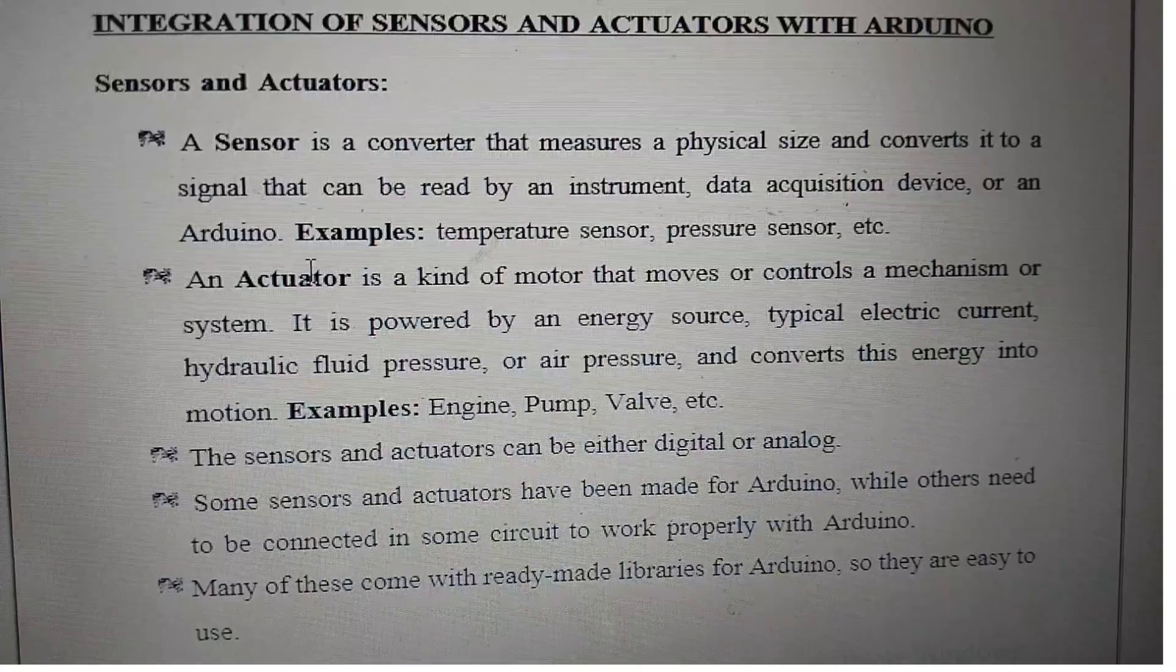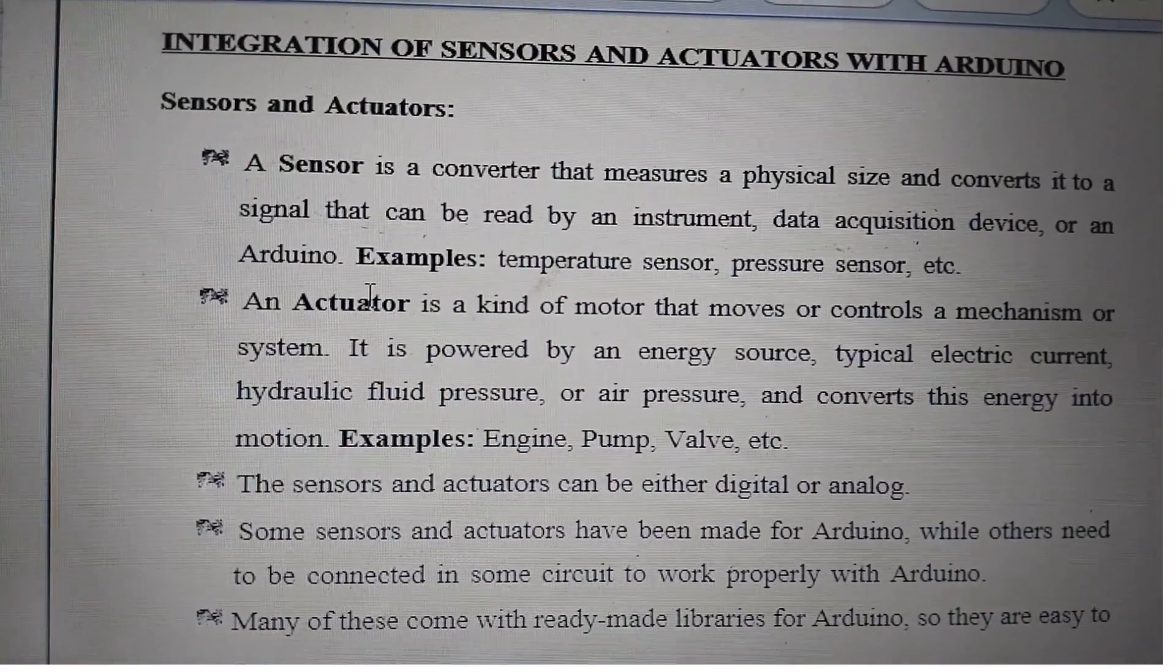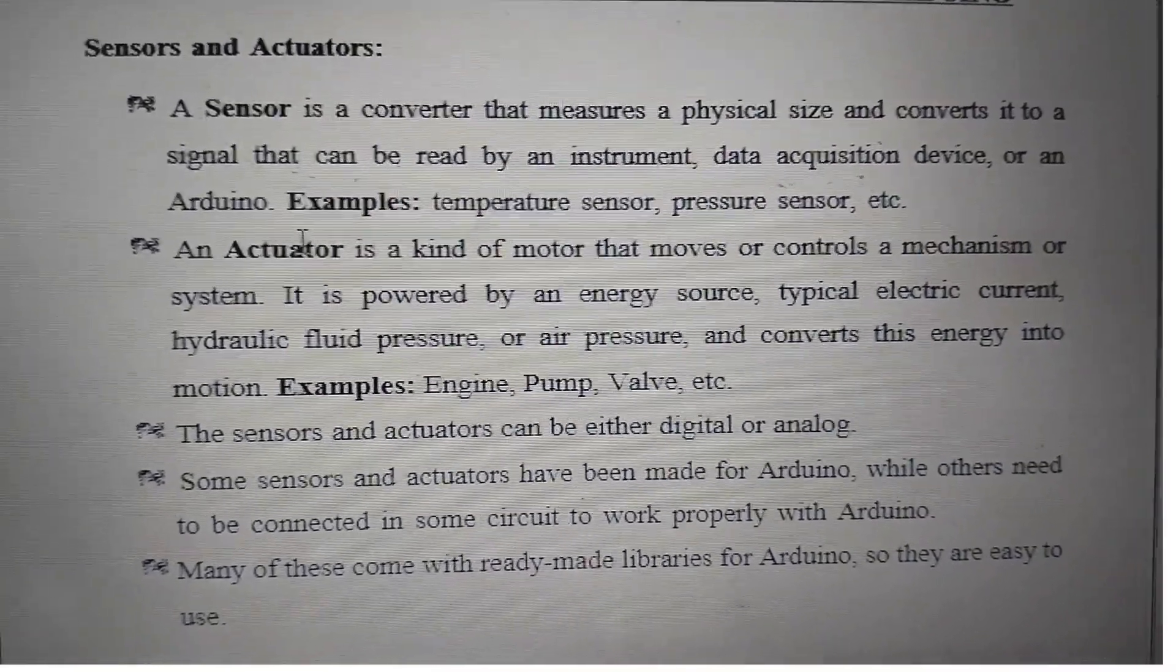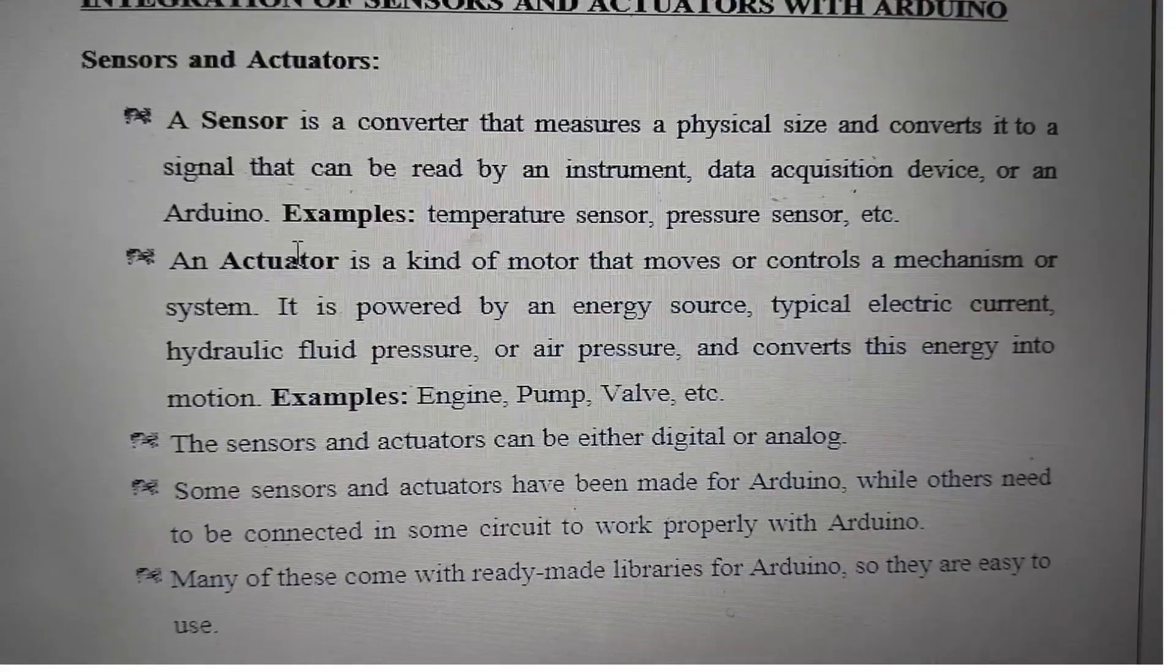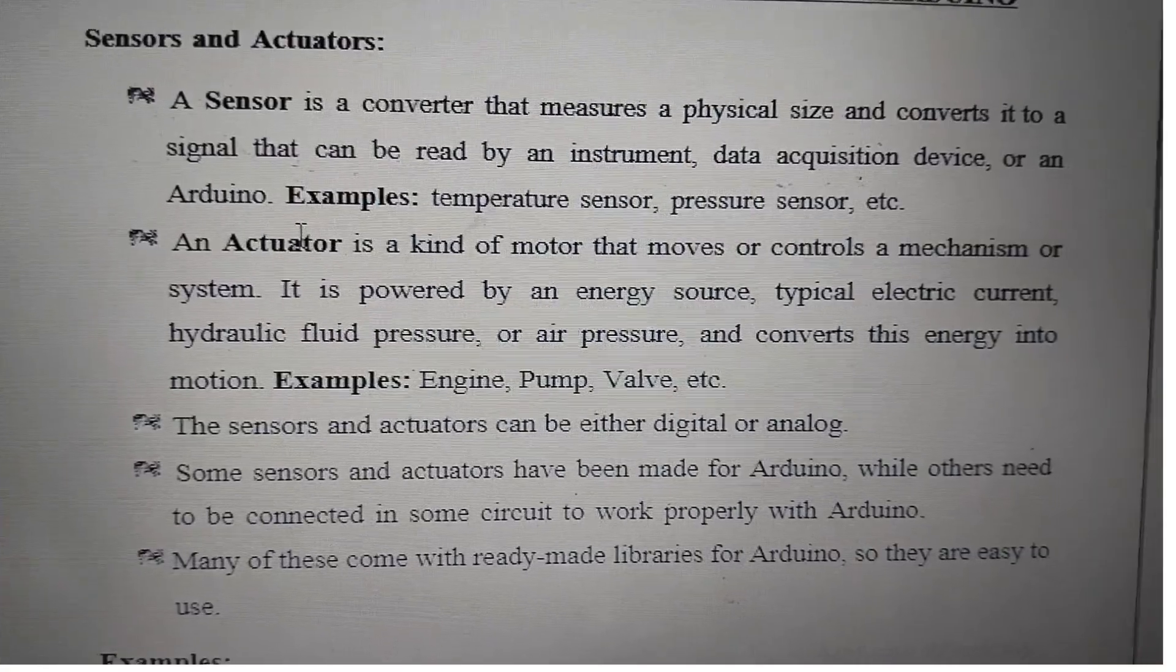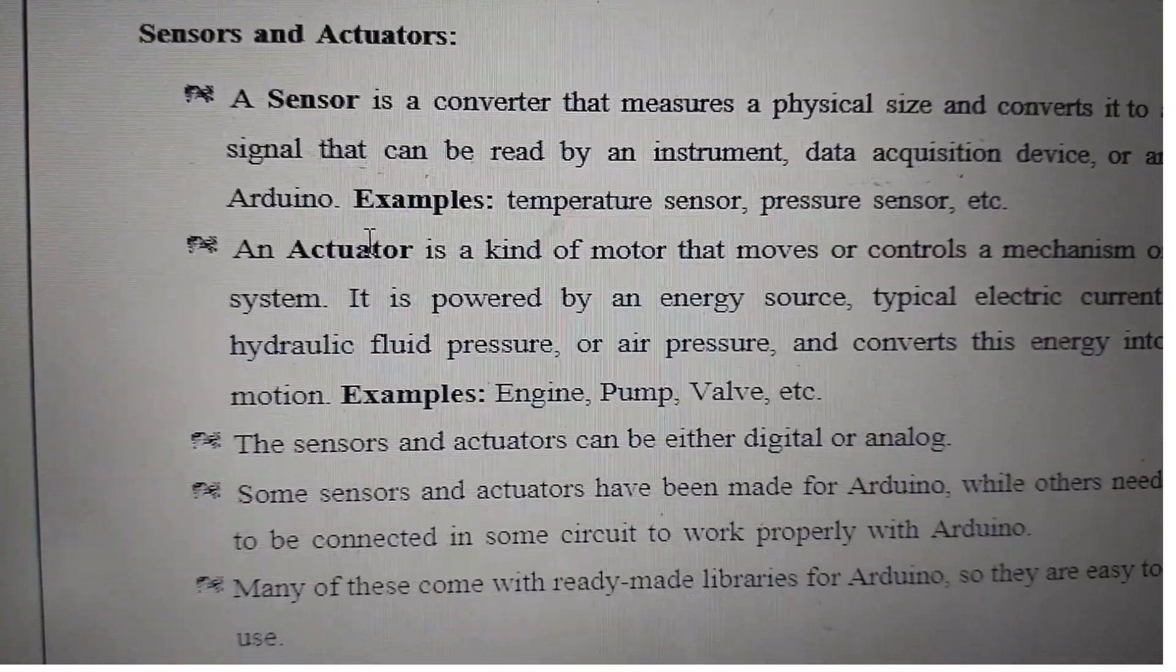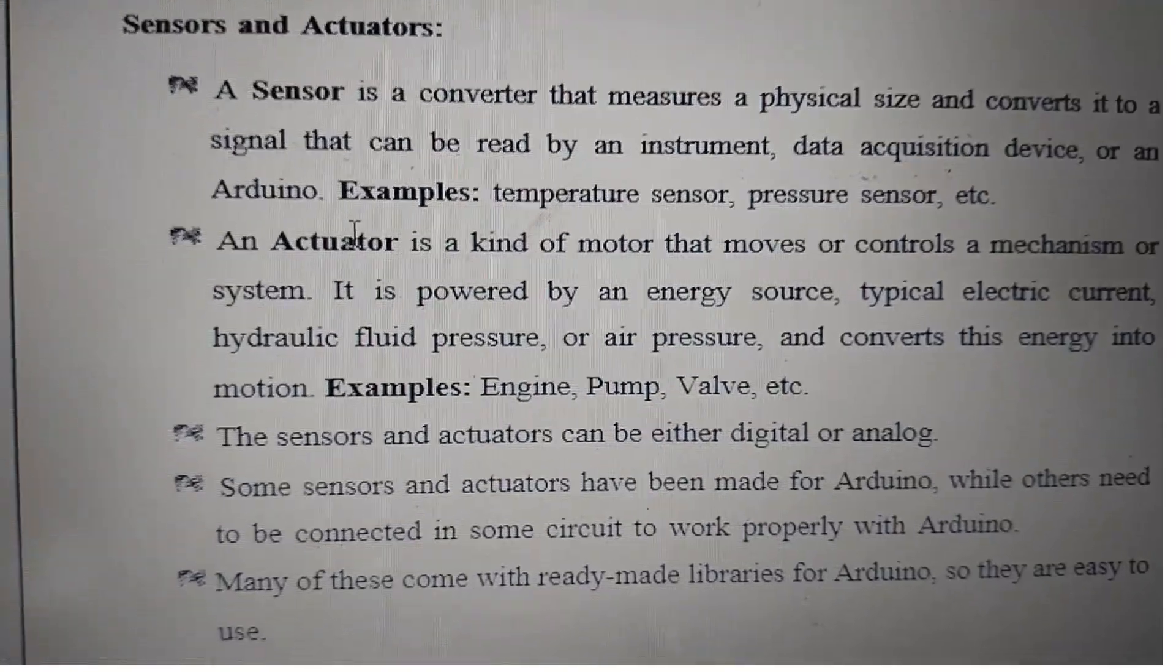What is an actuator? An actuator is a kind of motor that moves or controls a mechanism or system. It is powered by an energy source, typically electric current, hydraulic fluid pressure, or air pressure, and converts this energy into motion.